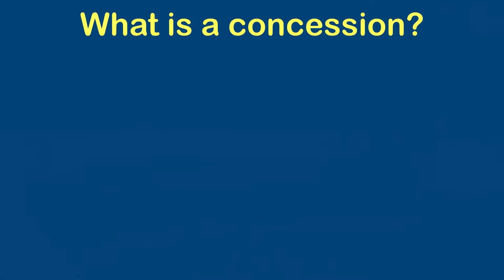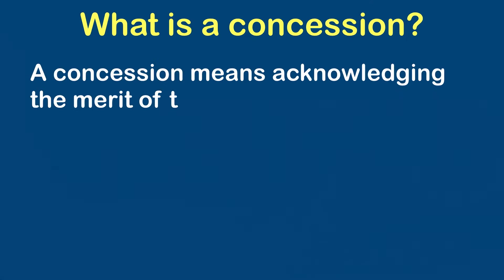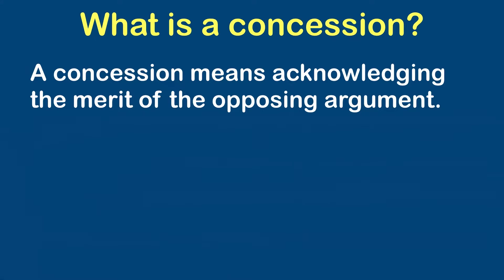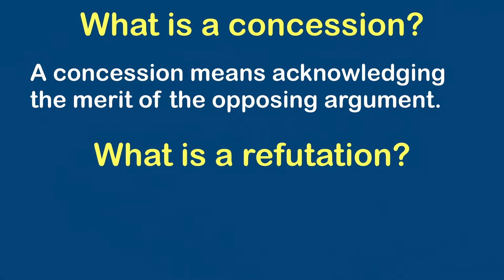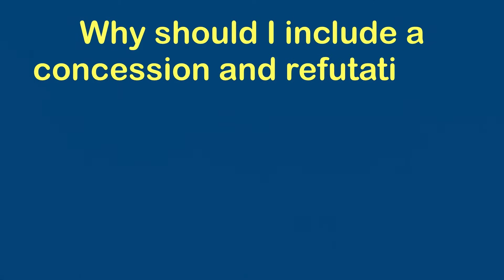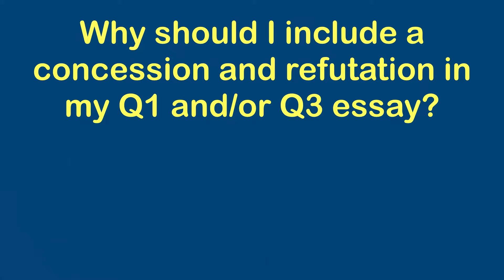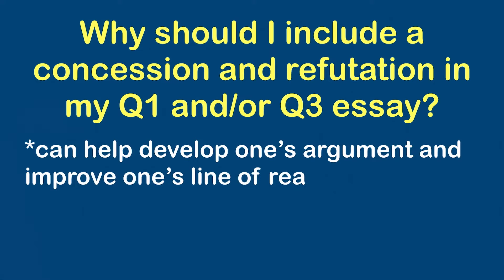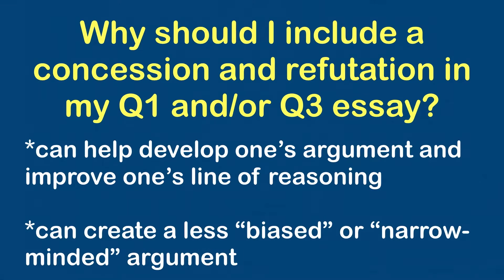To do this we need to understand what a concession and refutation actually are, and we need to understand that they come as a pair. A concession is the first part — that is when you concede or acknowledge the merit or value of the opposing side. The refutation is the second part, and that is when you refute the concession and assert your position. If you've ever had a conversation with somebody who isn't willing to consider other people's viewpoints, you know how frustrating that can be. It's equally as frustrating to read an essay where the writer doesn't consider the other side, and that's why a concession and refutation is very beneficial to student writers. It allows you to show a more mature outlook because you've considered the opposition, and it can also help you strengthen your line of reasoning and develop your argument even more.